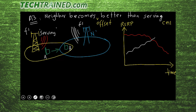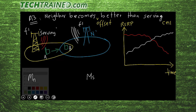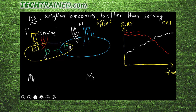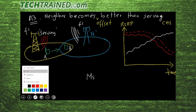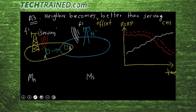Mathematically, let MN represent the measurement on the neighboring cell and MS represent the measurement on the serving cell. The UE is measuring both cells but won't trigger an event immediately. First, the UE adds an offset value to the serving cell — typically around 1 to 2 dB in practice — and subtracts a hysteresis value from the neighboring cell.